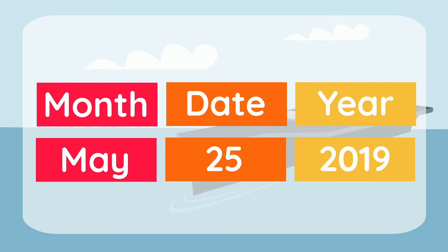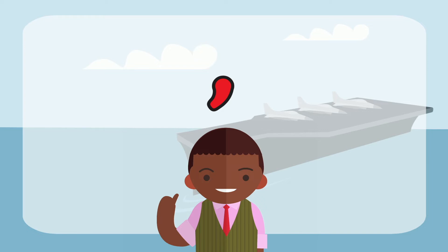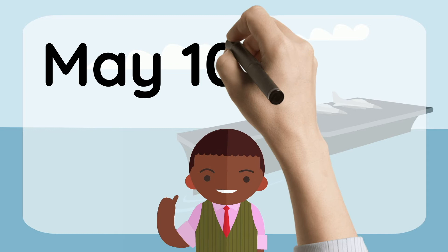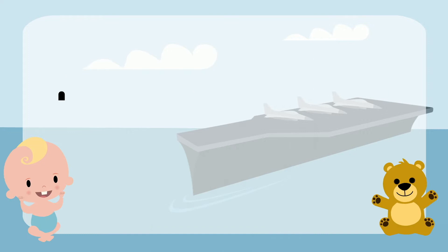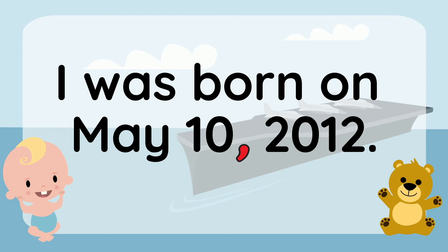When writing a date, we use a comma to separate the date from the year, like this: May 10th, 2012. Do you see the comma after the date to separate it from the year? Let's use it in a sentence: I was born on May 10th, 2012.